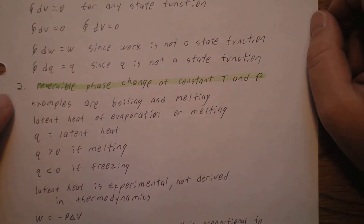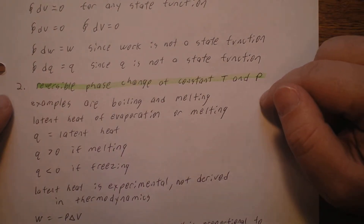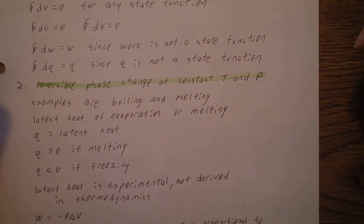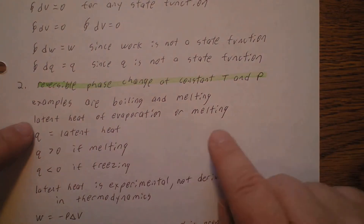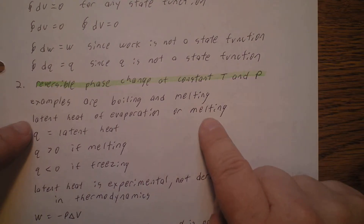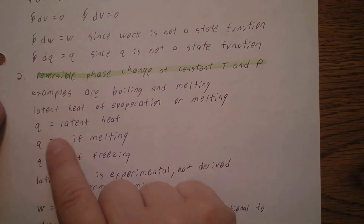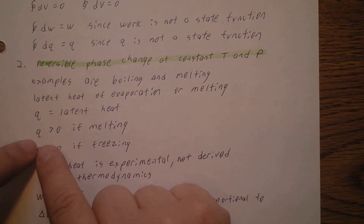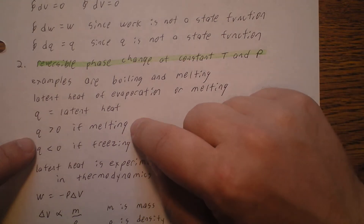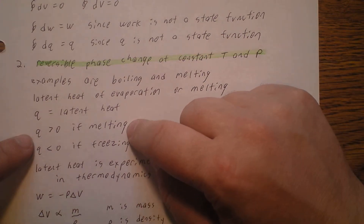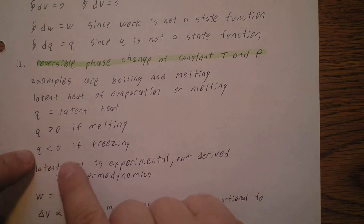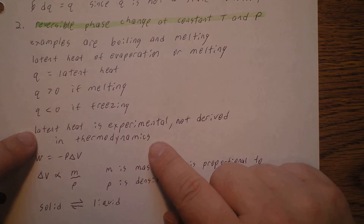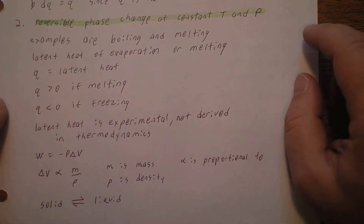Now, what about a reversible phase change at constant temperature and constant pressure? An example of a phase change would be boiling a liquid or melting a solid. For boiling we have the latent heat of evaporation, and for melting a solid we have the latent heat of melting. So Q is going to be the latent heat. Q is greater than zero for melting because we're adding heat to melt the solid; going the other way — freezing a liquid — Q is less than zero since energy leaves the system. Note that latent heat is experimental; in thermodynamics we have no way to derive it.